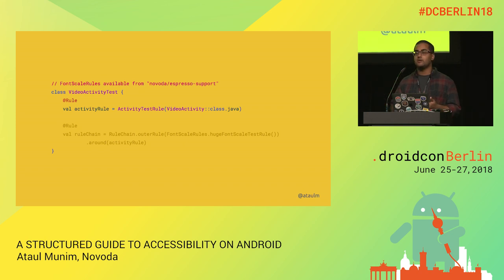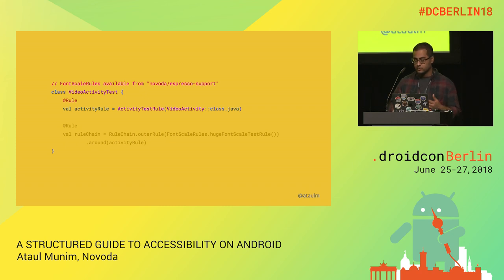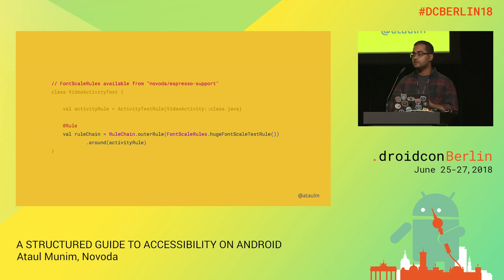As part of your Espresso tests, you might be using activity test rules, which work by spinning up your activity when tests start and tearing it down after. You can combine multiple test rules with a rule chain, and one of the rules we created at Novoda was the font-scale rule. When the font-scale rule wraps the activity test rule, the font size on the device is changed first, then your activity spins up already at the correct size, your test runs, the activity tears down, and then the font size resets to its original value.